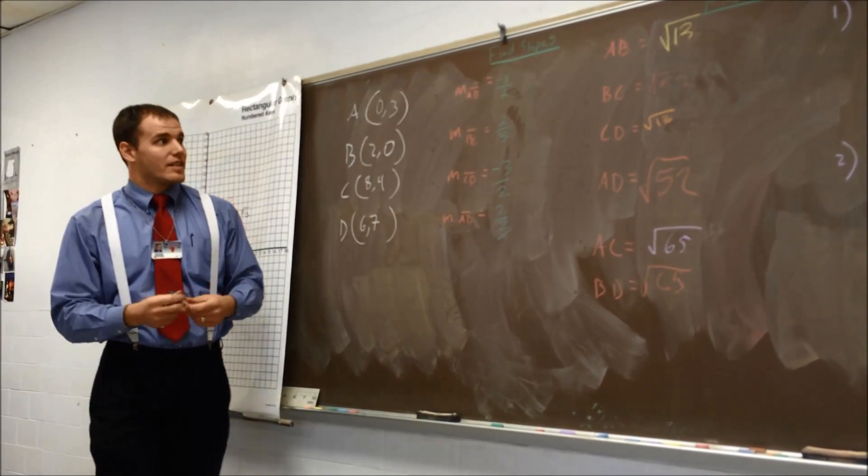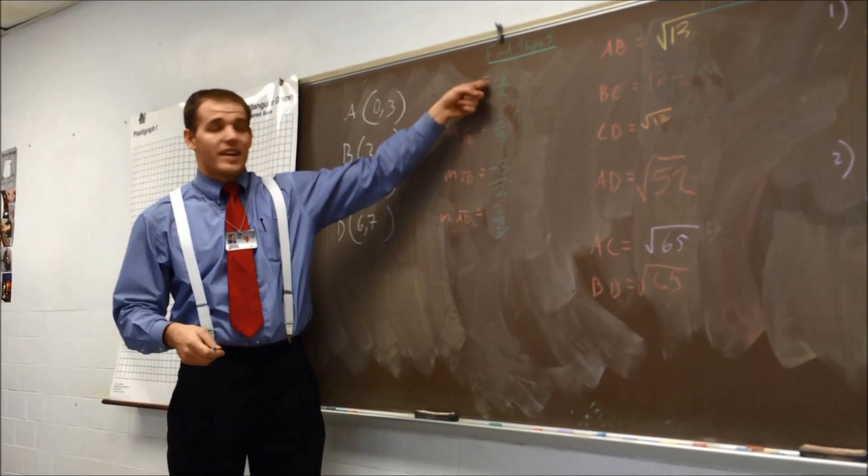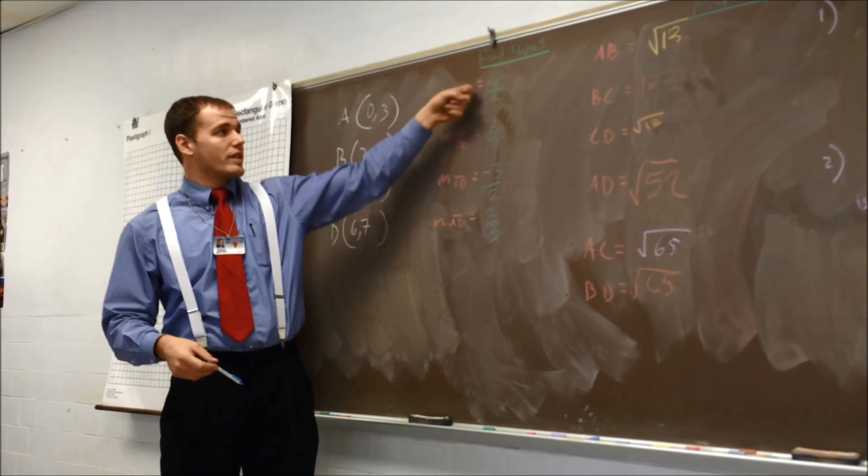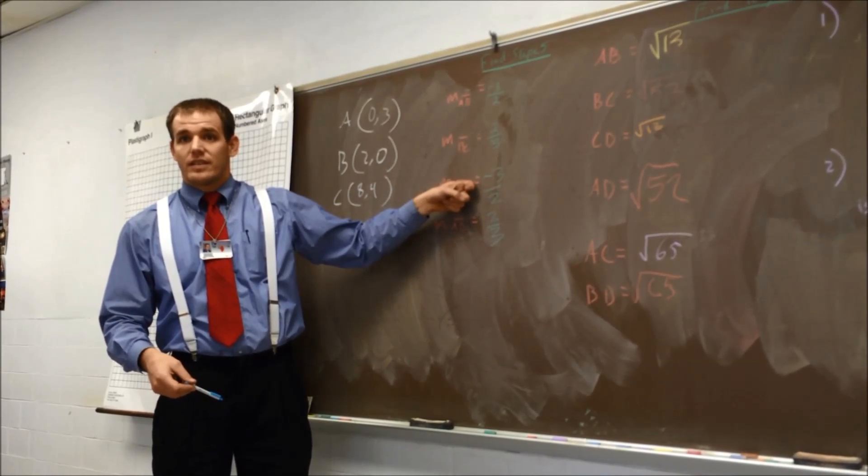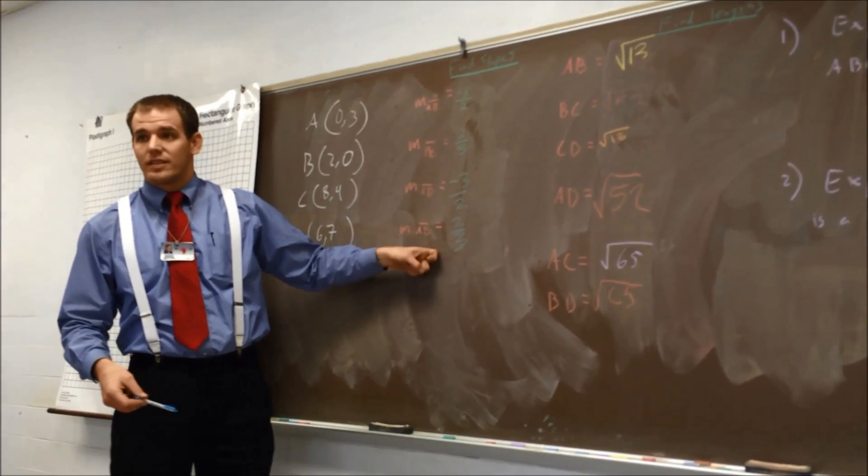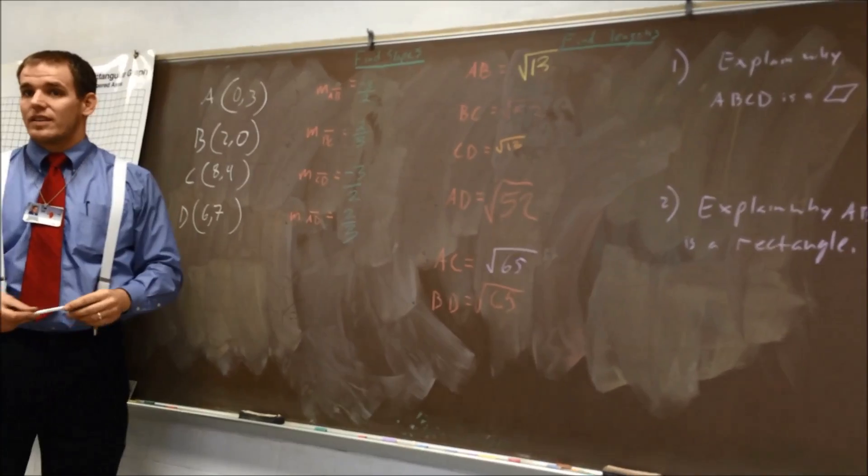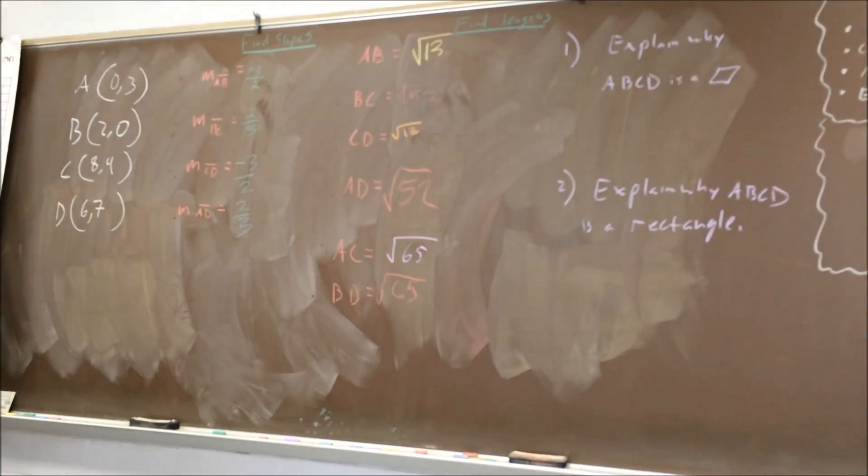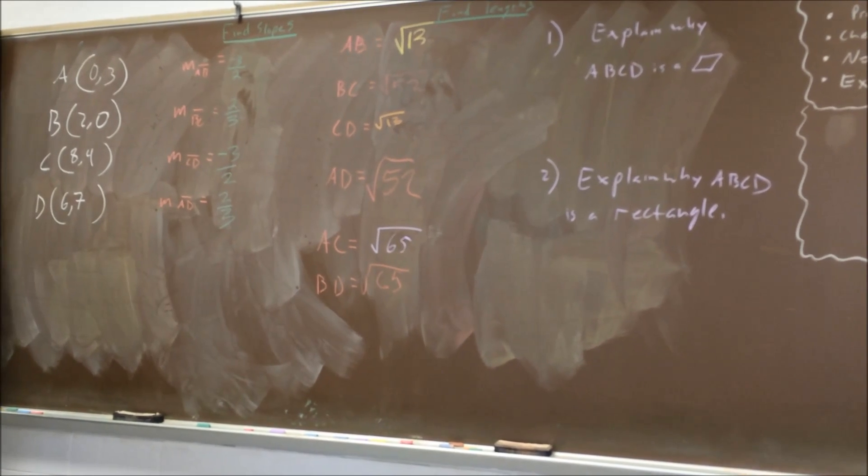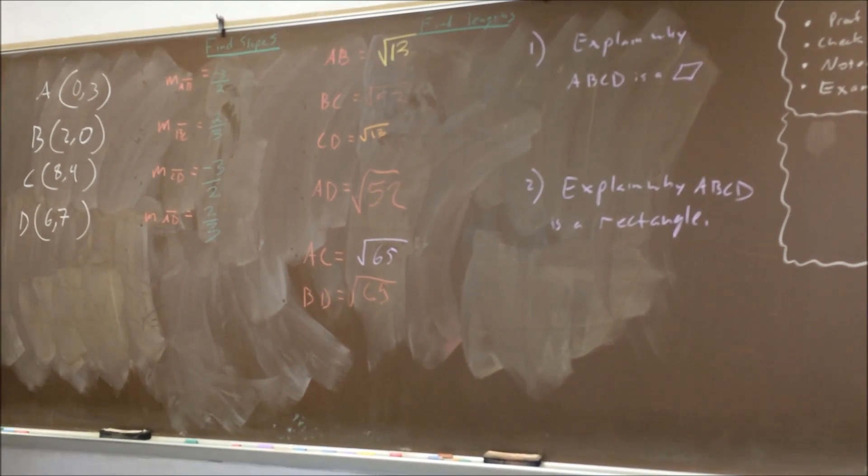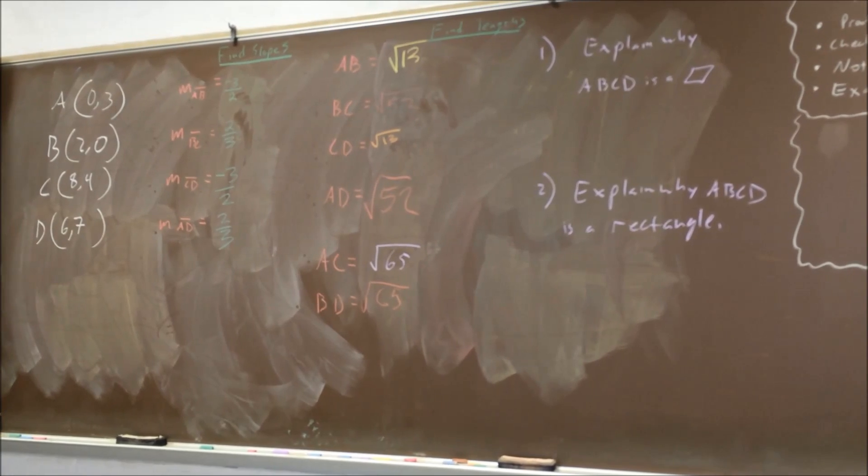Did we fraction, flip, and change the sign? Yes, we did. So these are perpendicular. Are these two perpendicular? Yes. Are these two perpendicular? Yes. Are these perpendicular? Yes. So that means all the sides are perpendicular. Perpendicular angles form what? 90 degrees. So is it a rectangle? Yes.